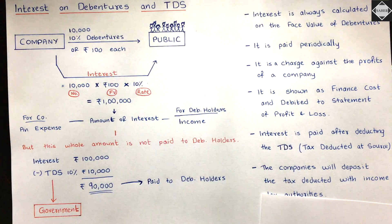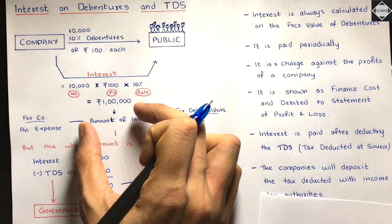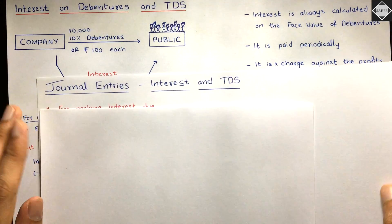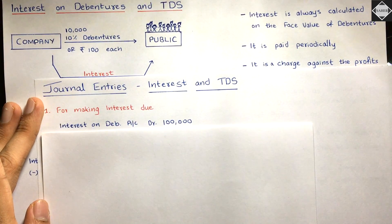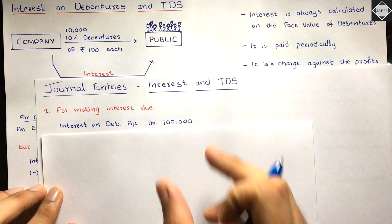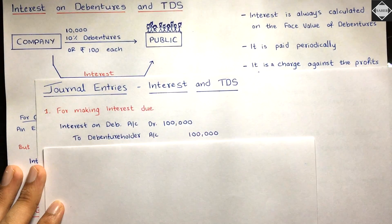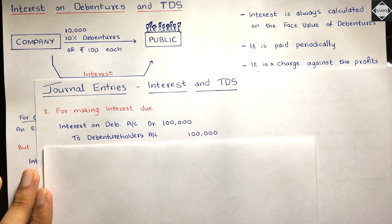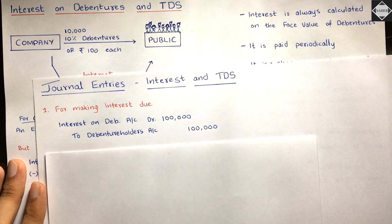Now let's understand the journal entries with these figures. First entry is for making interest due — the company accepts it must pay 1 lakh interest. Entry: Interest on Debenture Account Dr. 1,00,000 | To Debenture Holders Account 1,00,000. This records the expense and the liability payable to the debenture holders.